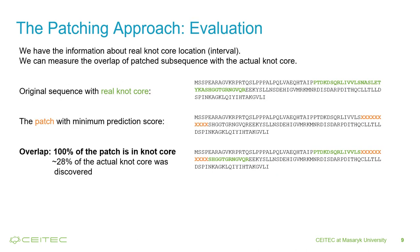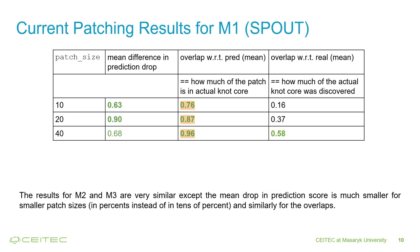To evaluate our approach, we looked at how the minimum patch overlapped with the actual knot core. Since in practice our patches have a predetermined size, we can't expect them to find the entire knot core. So we were interested in two metrics: first, how much of the patch is inside the knot core, and second, how much of the actual knot core is discovered. Here we can see the results for the SPOUT family. On average, most of the patch is located inside the knot core, and we can conclude that the model's high accuracy is not due to some artifact in the data, but the model was actually able to learn what was wanted.